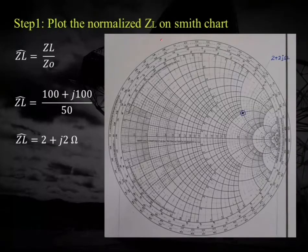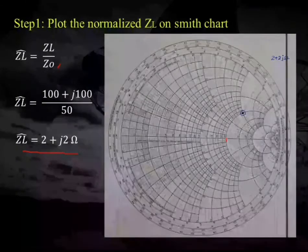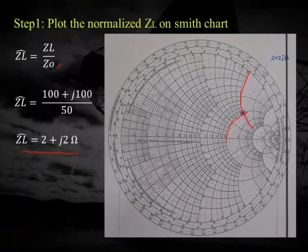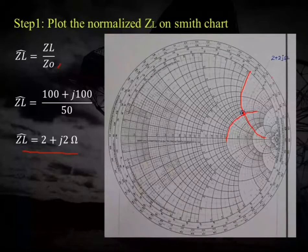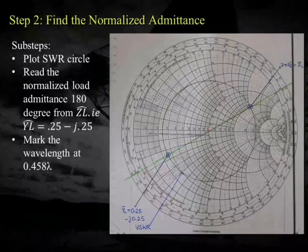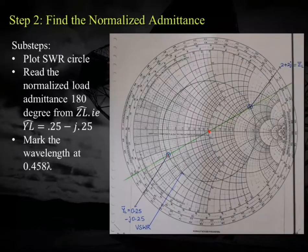In step 1, we plot the normalized load impedance on the Smith chart. The normalized value is 2 + j2. We look at the resistance circle of value 2, and the reactance circle of +j2, which is above the center line. These two circles meet at the point zL = 2 + j2. Next, we find the normalized admittance yl by drawing the VSWR circle centered at 1,0 through zL, and reading the diametrically opposite point, which gives yl = 0.25 − j0.25.